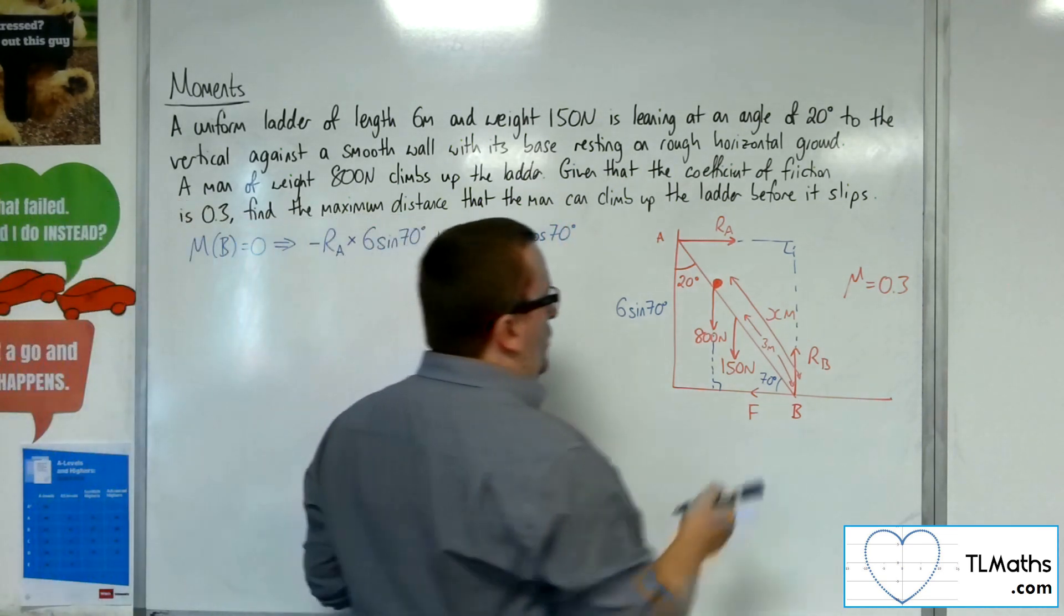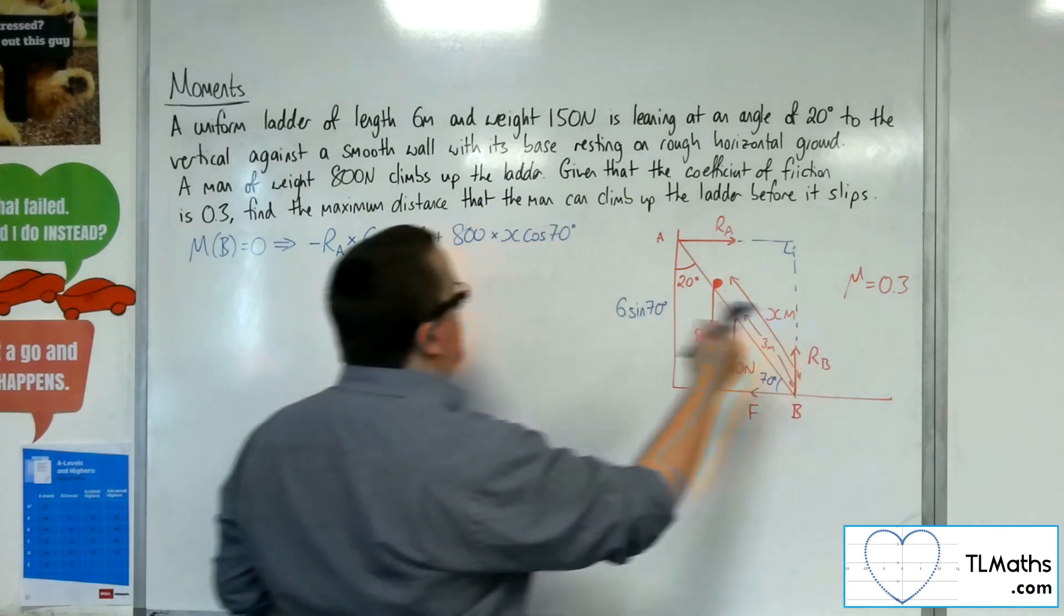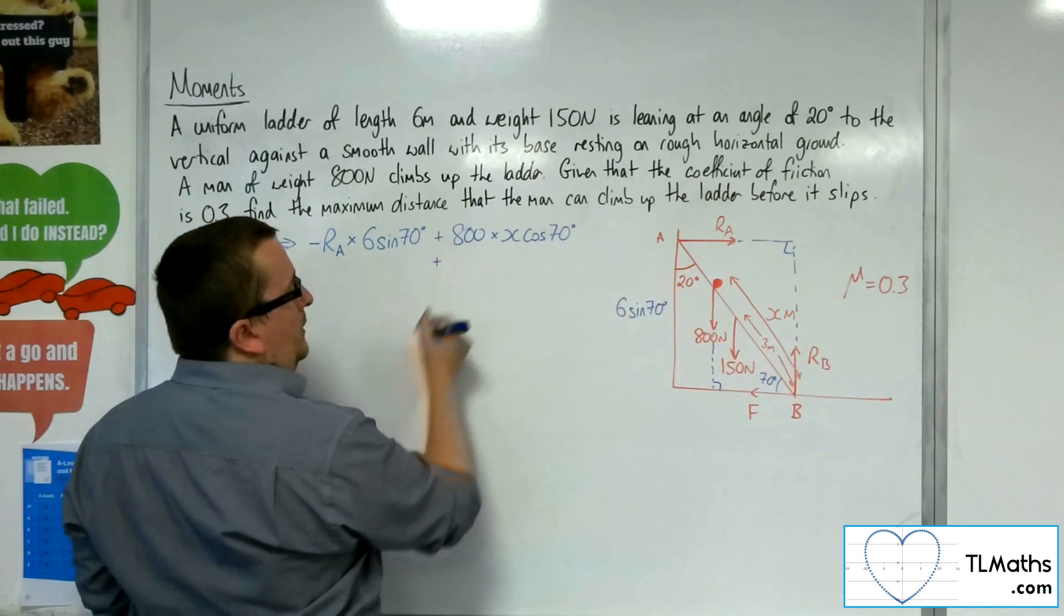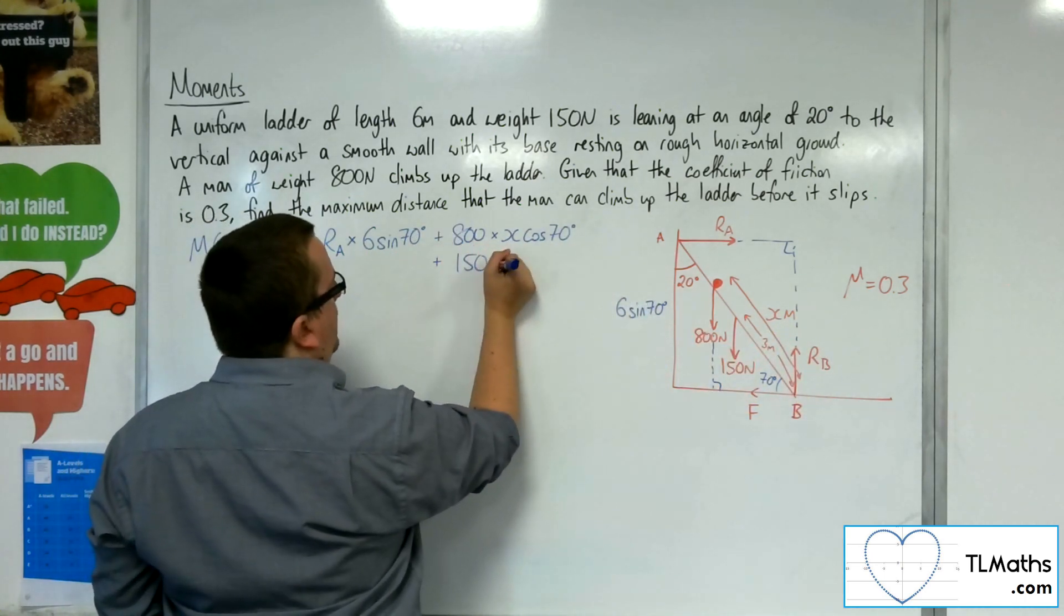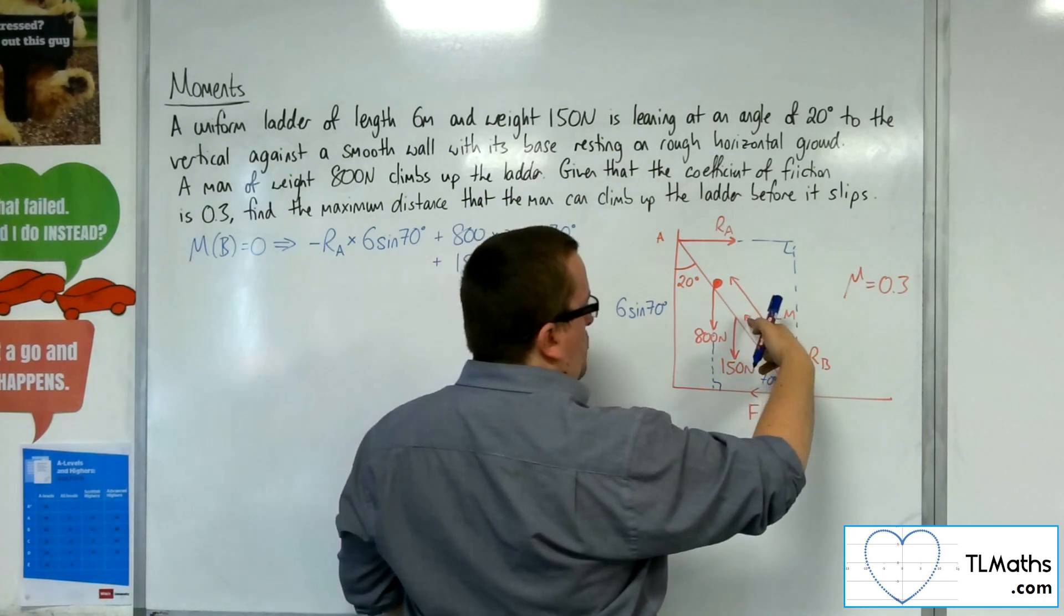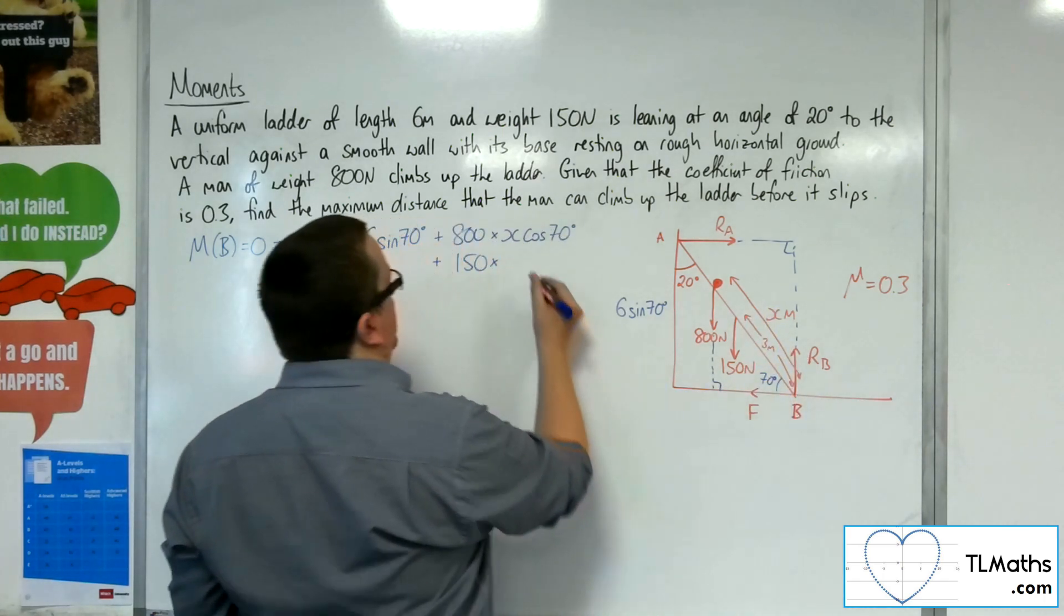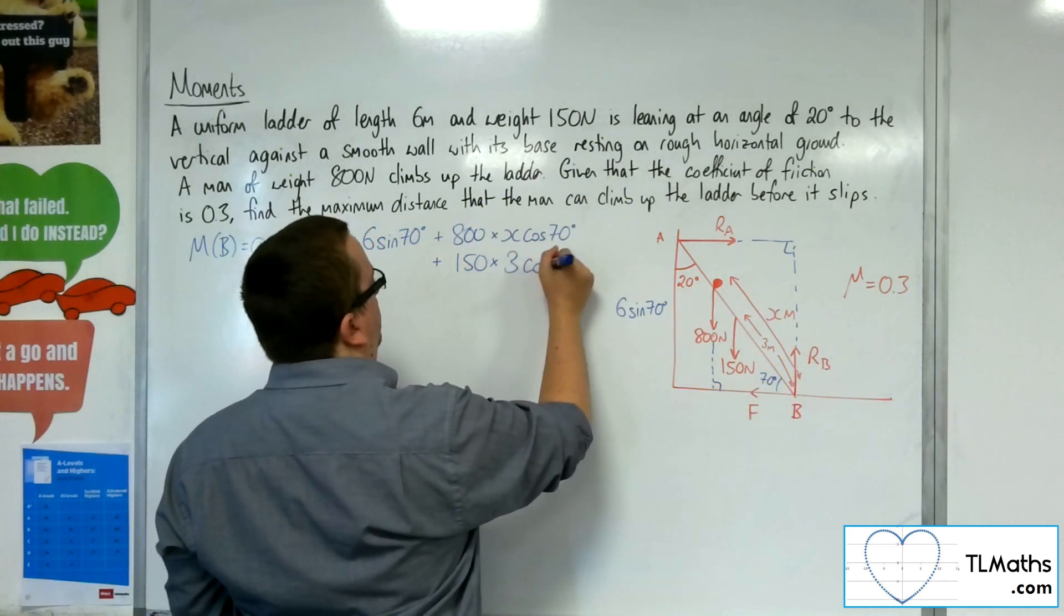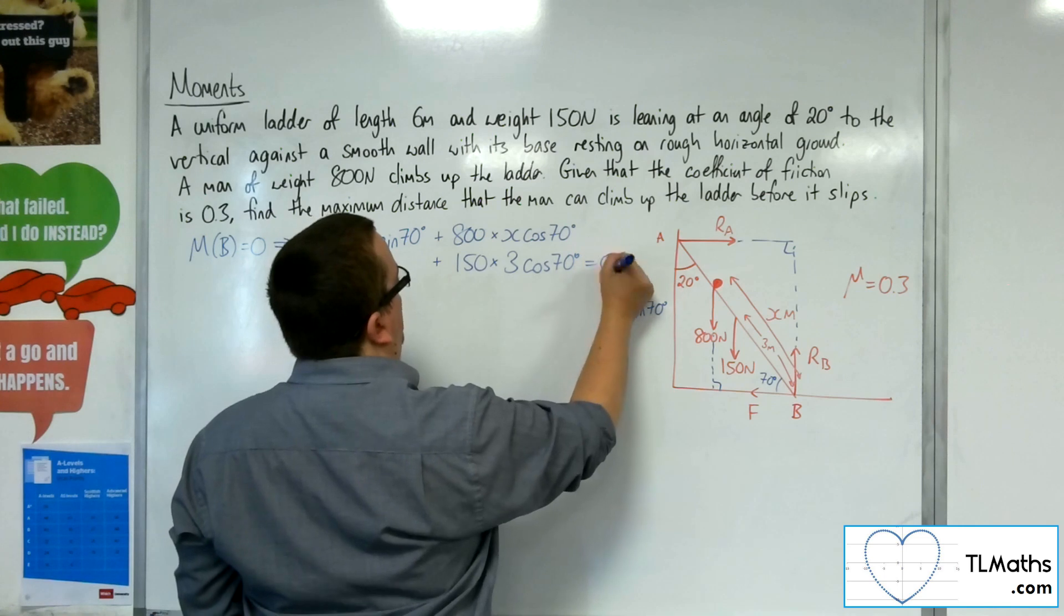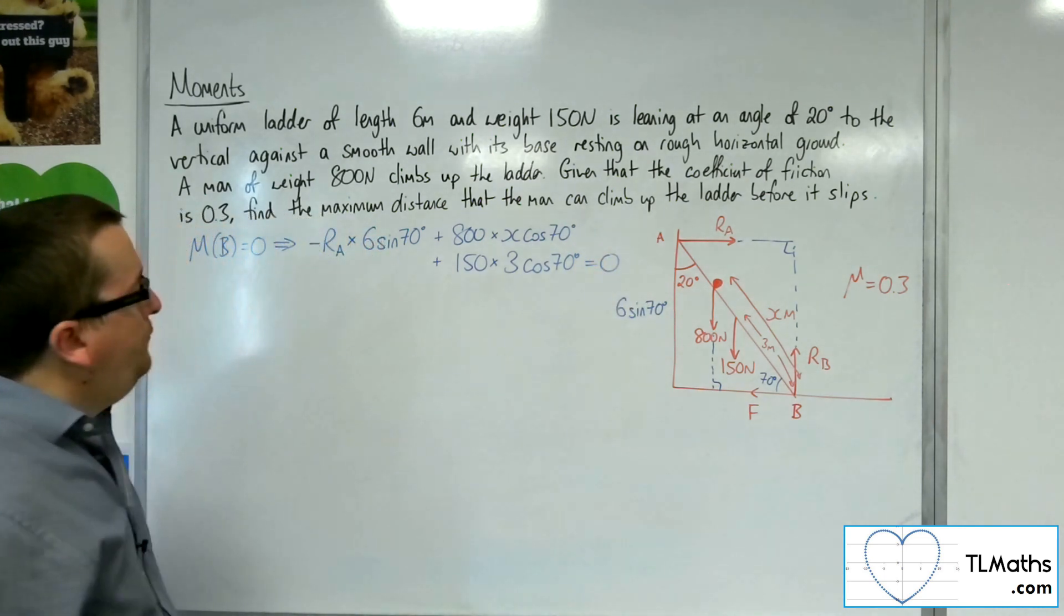Then we've also got 150 newtons working that way, and it's going around positive. So plus 150 times by 3 cosine 70. And that's going to be equal to 0.